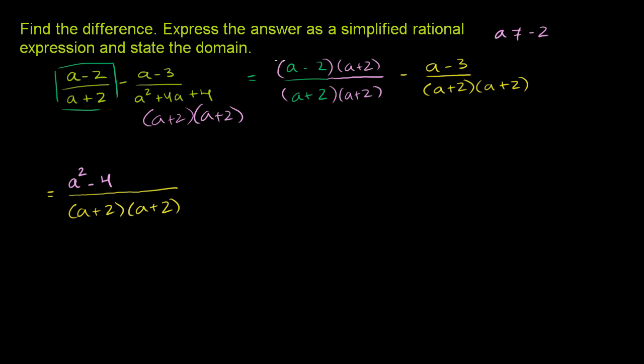And then you have minus a minus 3. So let's be very careful here. You're subtracting a minus 3, so you want to distribute the negative sign, or multiply both of these terms times negative 1. So you have minus a, and then negative 3 is plus 3.